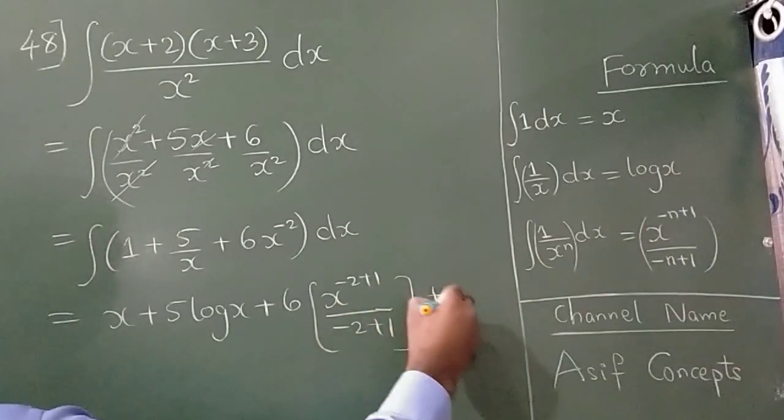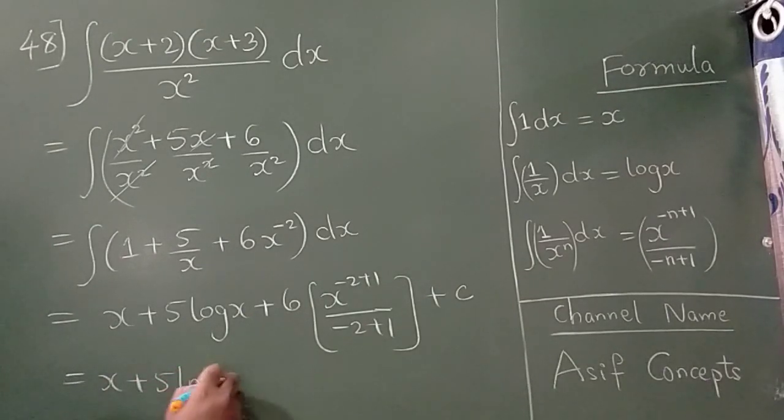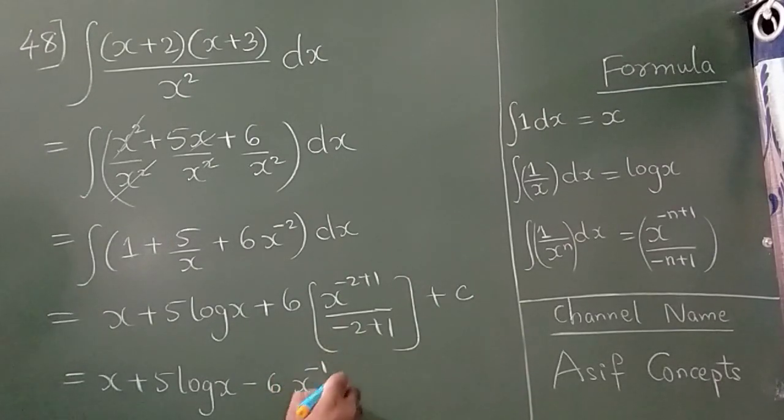Plus c. So x plus 5 log x minus 6 times x raised to minus 1 plus c. So this is the answer.